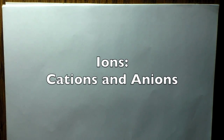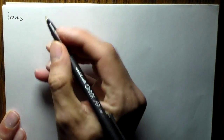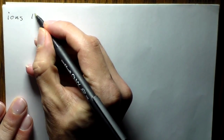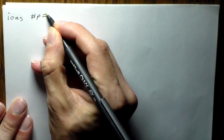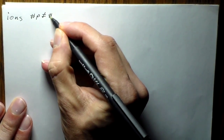Today we're going to be talking about ions. When we have an ion, this is when the number of protons is not going to be equal to the number of electrons.